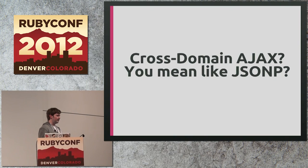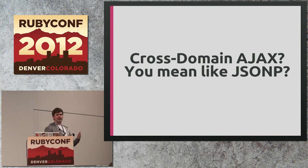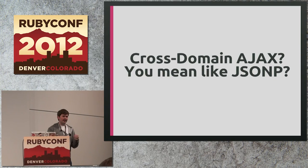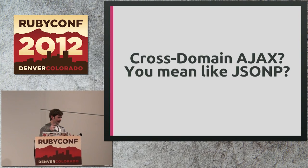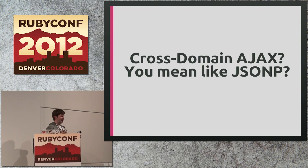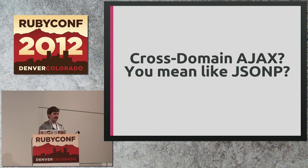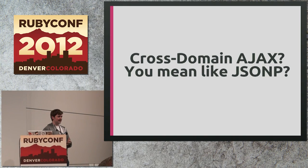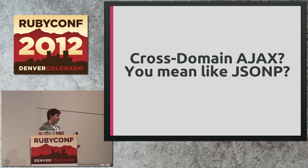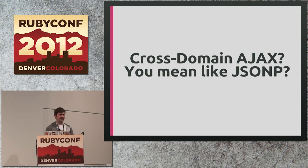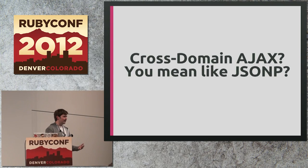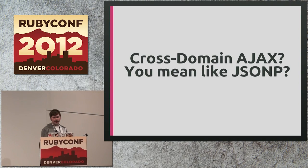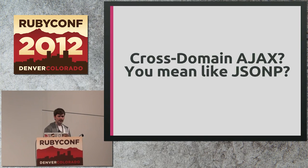You might be familiar with JSONP, where you make a request to a remote endpoint that wraps it in a callback function executed as JavaScript on your side. JSONP is effectively a hack way to do cross-domain Ajax. It only works for GET requests, you don't have any kind of error tracking or error reporting, no custom headers — there are lots of things you can't do with JSONP that you can do with CORS.